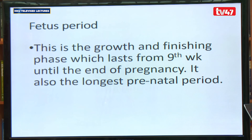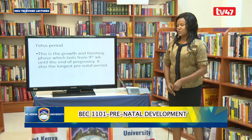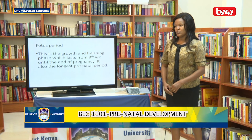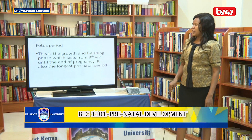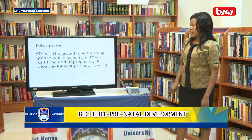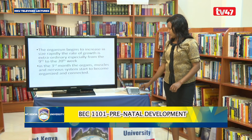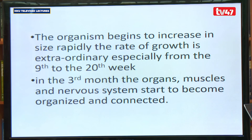Then we move on to the third stage, which is referred to as the fetus period. The fetus period is the last and longest stage of development. The first stage lasts for two weeks, the second for six weeks, so the third stage lasts for about 30 weeks — from the eighth week until the baby is delivered. This stage is therefore called the growth and finishing phase of the prenatal period.